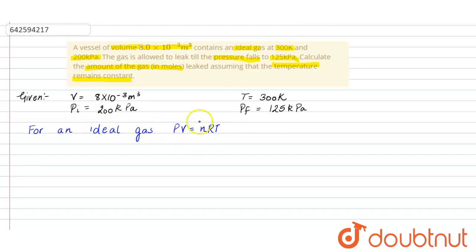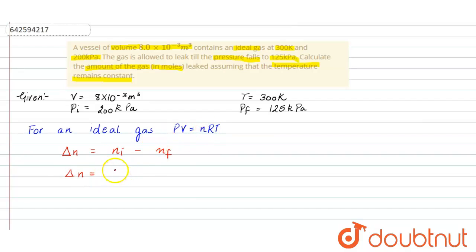With this equation we can calculate the initial and final number of moles, then subtract to get delta n. So delta n = n_initial − n_final = (P_initial × V) / (RT) − (P_final × V) / (RT). Since temperature, volume, and R are all constant, only pressure is changing.